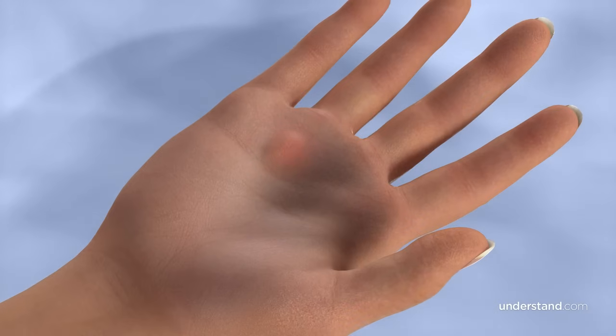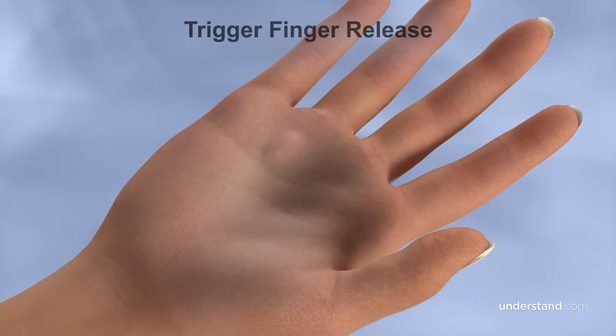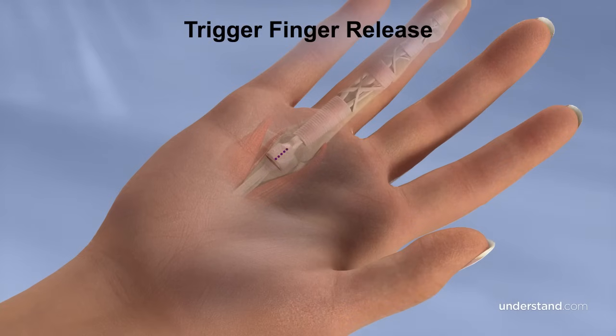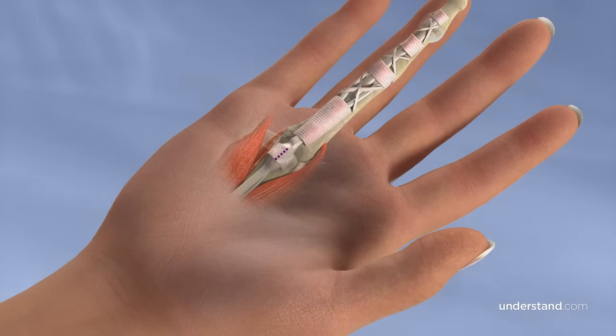A procedure, commonly referred to as a trigger finger release, is typically performed by making a small incision in the palm to access and release the A1 pulley by cutting it open. This allows the thickened tendon and nodule to move past the pulley without getting stuck.